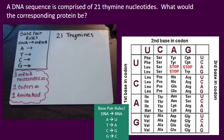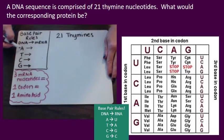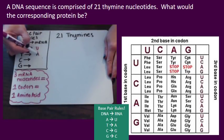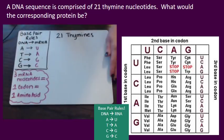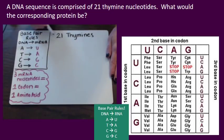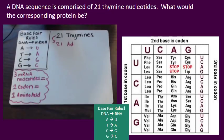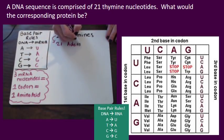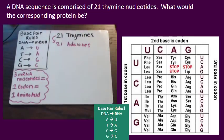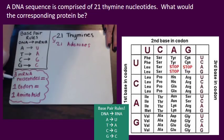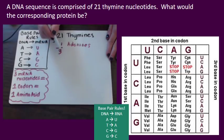Our next problem: a DNA sequence is comprised of 21 thymine nucleotides — what would the corresponding protein be? Base pair rules: A bonds with U, T bonds with A, C bonds with G, G bonds with C. I know that if I have 21 thymines, my messenger RNA is going to be 21 adenines, because each T bonds with an A. And since three messenger RNA nucleotides equals one codon, I can divide 21 by three to get seven.